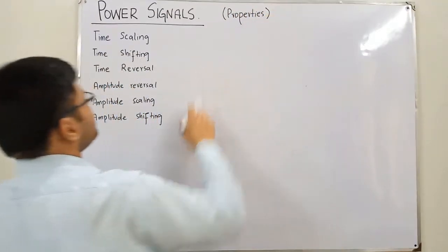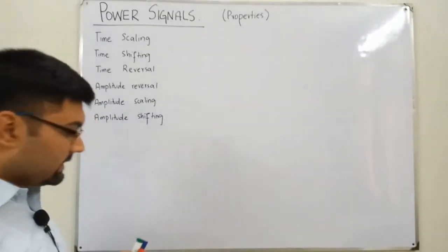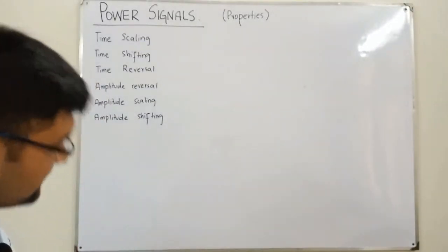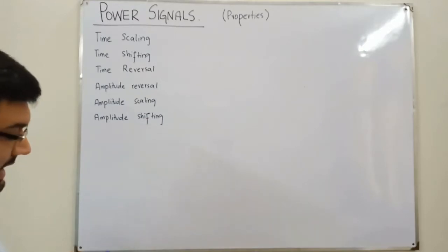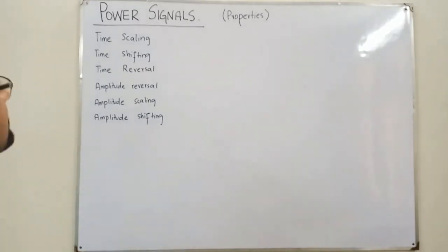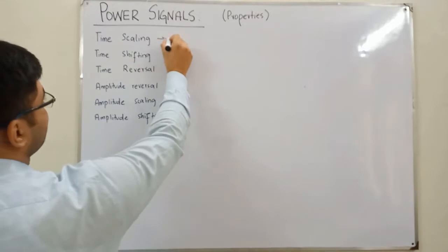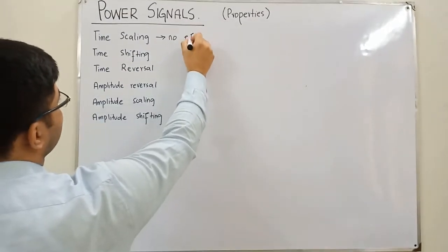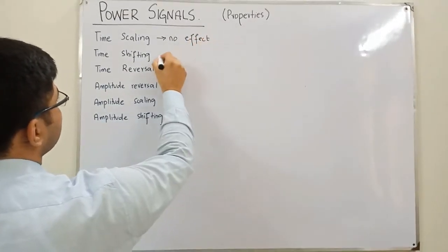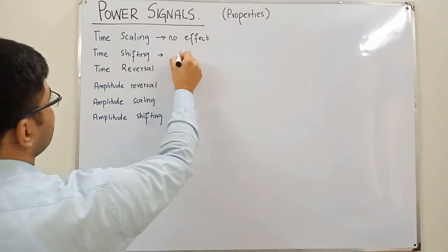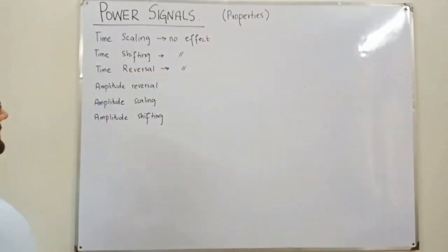These are some basic transformations that we have already seen. Today we see the effect of them on the power of a signal. Time scaling has no effect on the power of a signal — in fact, no time transformation has any effect. This means time shifting also has no effect, and time reversal also has no effect.